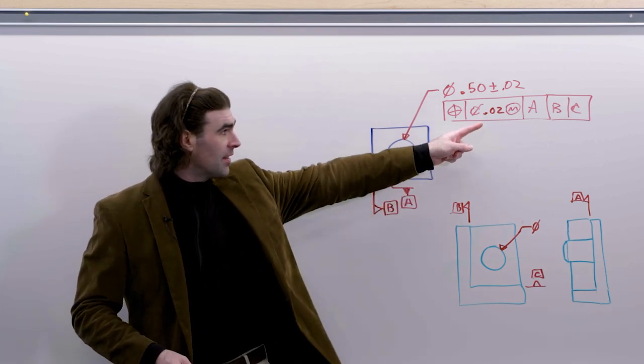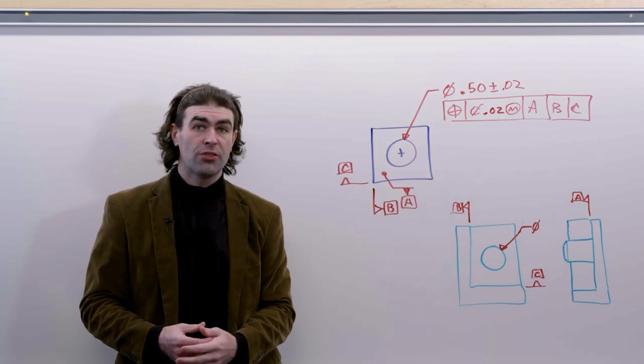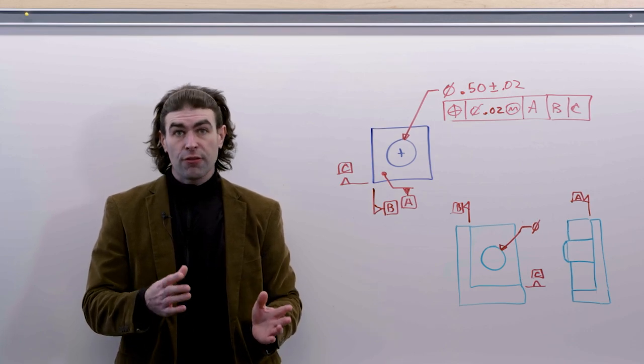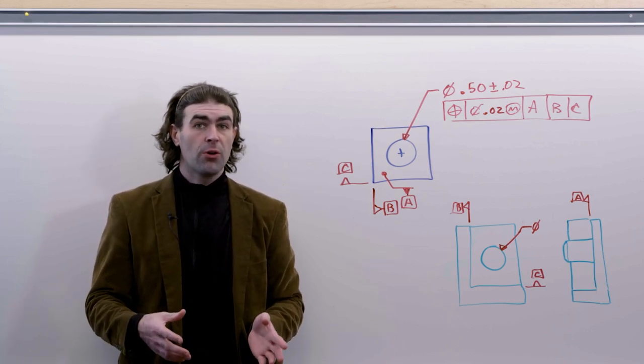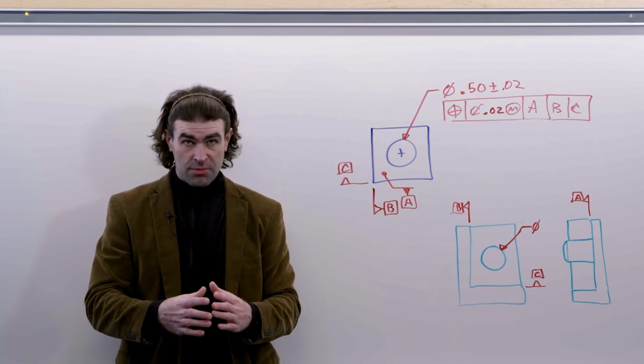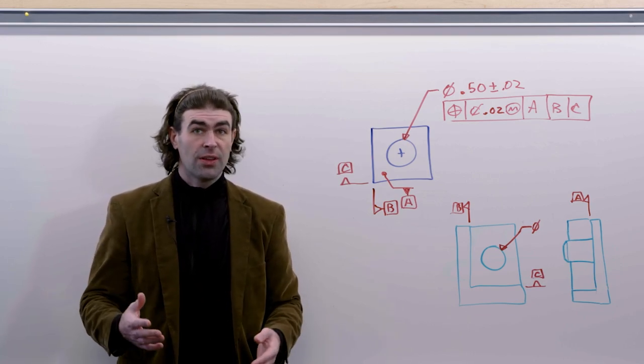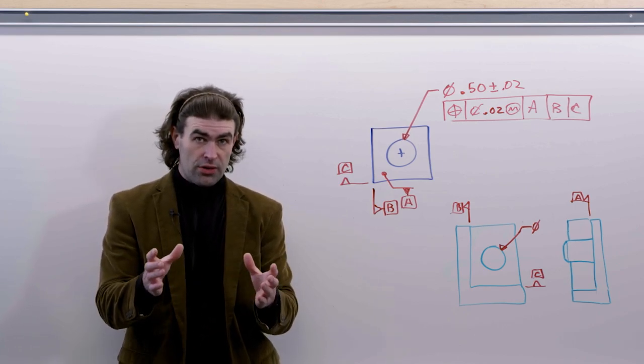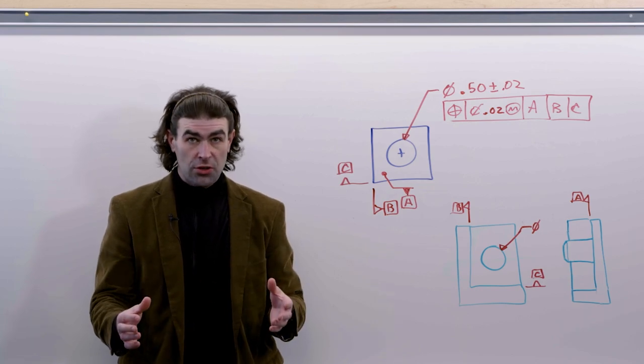The MMC symbol in the feature control frame means that you're simulating the virtual condition with a physical gauge. You could do this with a CMM that can, if you take enough points, essentially simulate a physical gauge. You're just simulating that virtual condition. If the part can clear that, it's good.